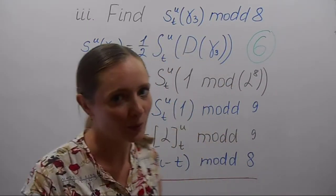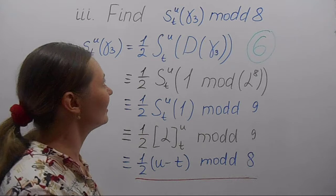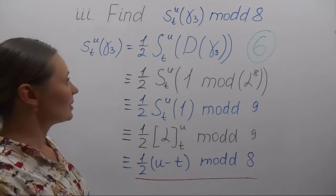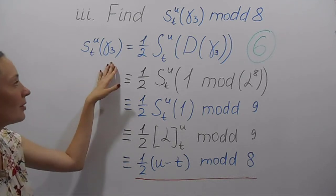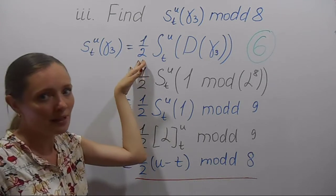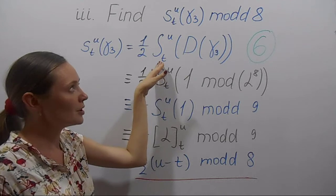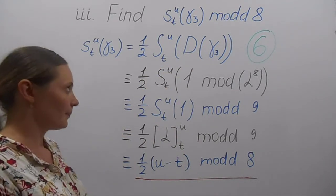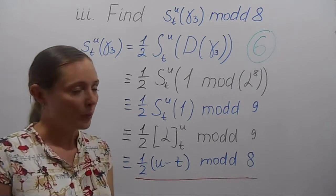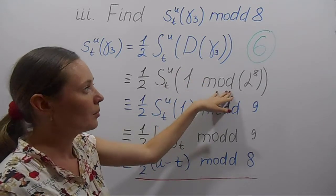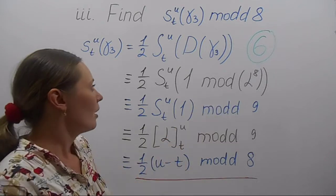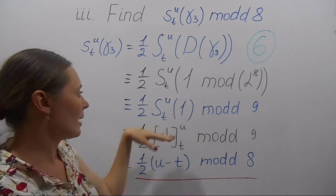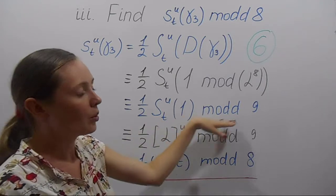In this part of the problem, we need to find the sine area from t to u of the curve γ3 mod d8. By the fundamental theorem, the sine area of γ3 is the same as one half of the integral from t to u of the area differential of γ3. From the previous part of the problem, we know that the area differential is 1 mod α8. From the property of the Faulhaber integral, we know that this is the same as the integral of 1 mod d9.